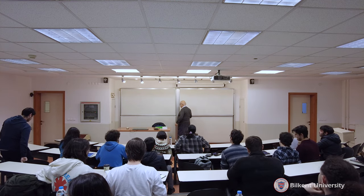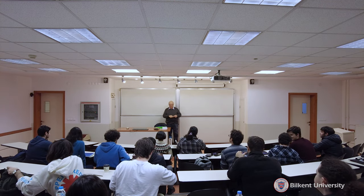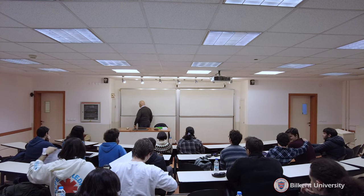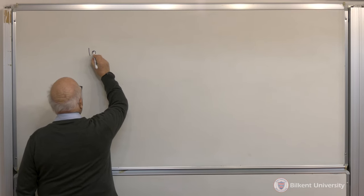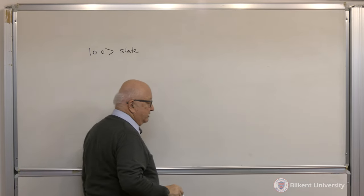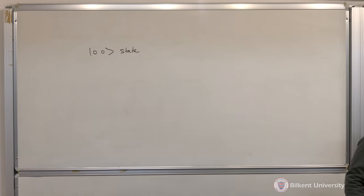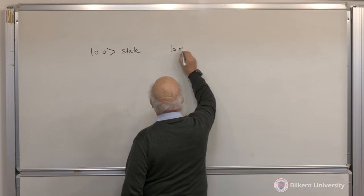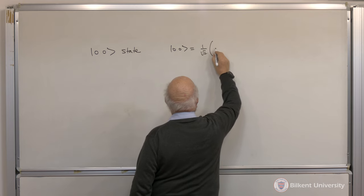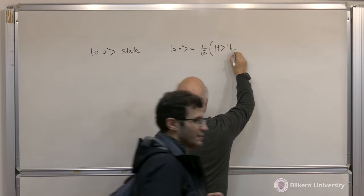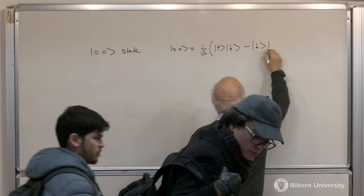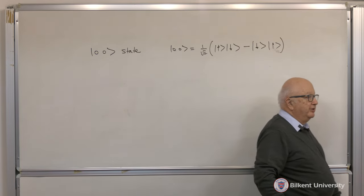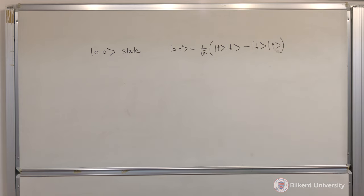We are going to talk today about an interesting topic which results due to entanglement that we discussed last time. We'll talk primarily about the singlet state — zero total angular momentum, and therefore zero z-component of angular momentum. We can express this as 1 over root 2 times (up_z down_z minus down_z up_z). I don't have to write z if it is understood to be z when I don't specify a direction. That's the singlet state.